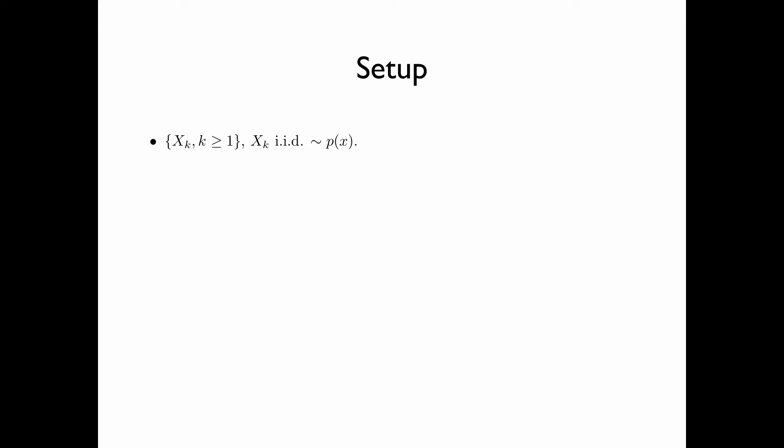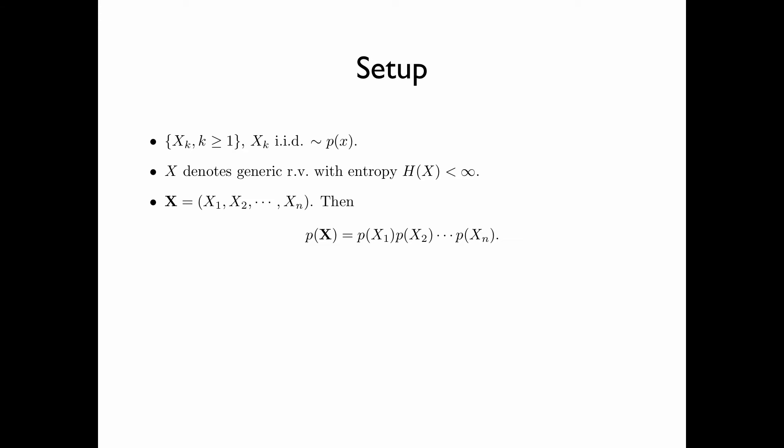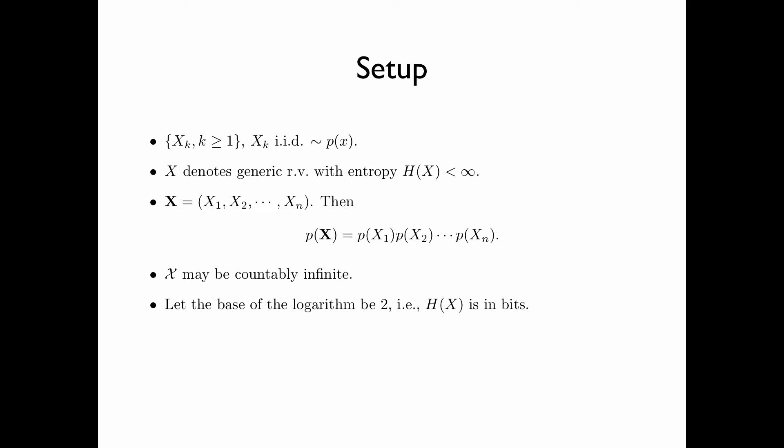Consider a discrete time random process x sub k, k greater than or equal to 1, where x sub k are IID with generic distribution Px. Let x denote the generic random variable with entropy H(x) being finite. Let bold x be the random vector x1, x2, up to xn. Because the random variables are IID, we have p of bold x equals p(x1) times p(x2) all the way to p(xn). We assume the alphabet x may be countably infinite, and let the base of the logarithm be 2, so H(x) is in bits.